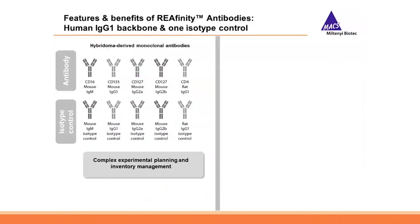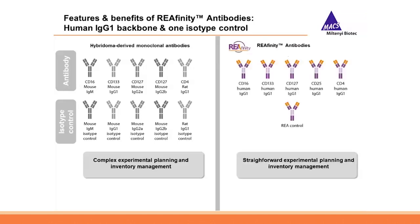With conventional antibodies you need different isotype controls for every single antibody, requiring you to plan experiments accordingly, purchase multiple isotype controls, and spend more time running controls. In contrast, because all Reaffinity antibody backbones are the same human IgG1 isotype, you can use the same isotype control for all of your antibodies, greatly simplifying your workflow.